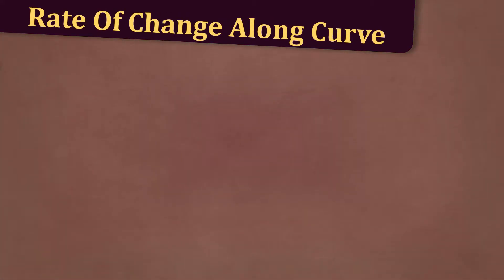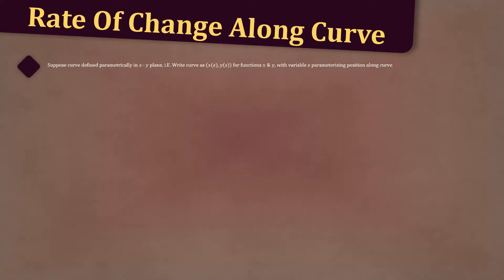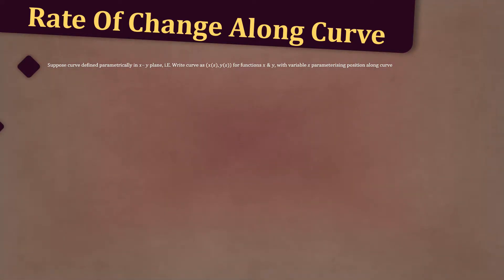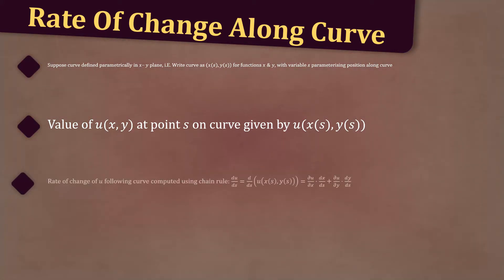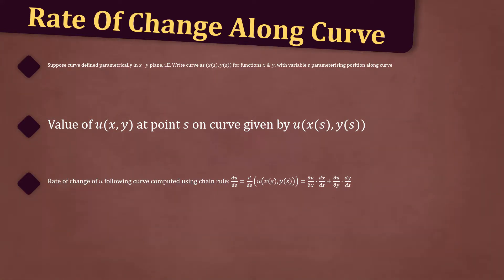Now let's state the rate of change along a curve. Suppose we have a curve defined parametrically in the x, y plane, i.e. the curve can be written as x(s) with y(s) for some functions x and y, with the variable s parametrizing the position along the curve. The value of u(x,y) at a point s on the curve is given by u(x(s), y(s)). The rate of change of u following the curve can be computed using the chain rule: du/ds equals the partial derivative of u with respect to x times dx/ds, plus the partial derivative of u with respect to y times dy/ds.